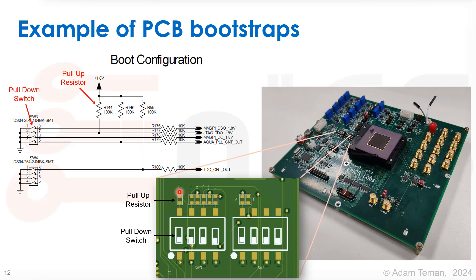We also have pull-up resistors. These small components are resistors, so what we have here is: we either connect to ground, or if we leave an open circuit, there is a very large 100 kΩ resistor that pulls up to VDD — 1.8 V in this case. These all go to the chip, so they're initially at zero or one. We can also override them because these are very large resistors, so we can drive something else without causing real contention.